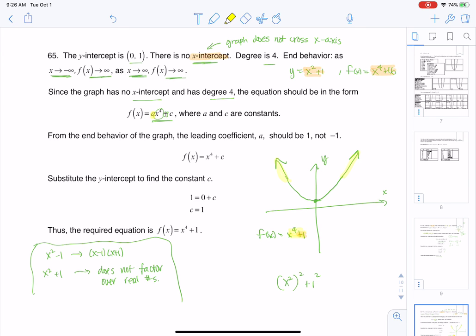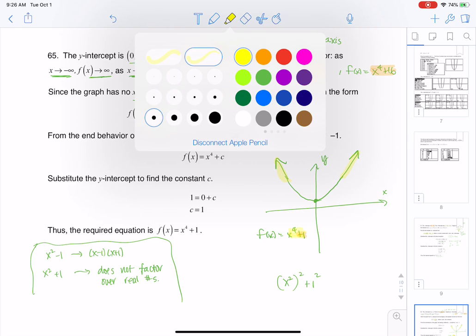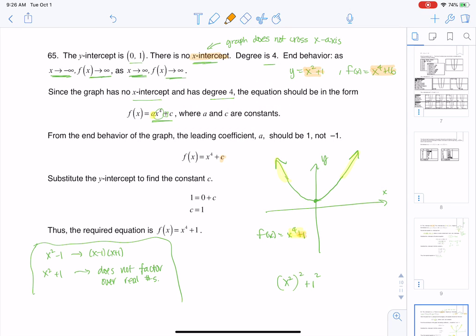And then last but not least, to solidify what the c value should be, I use the y-intercept. The y-intercept says plug 0 in for x and plug 1 in for y, because my y-intercept was (0, 1), and solve for c. Sure enough, I get c = 1, which is what I guessed anyways. So that's a more formal way of getting to the algebraic equation x⁴ + 1.